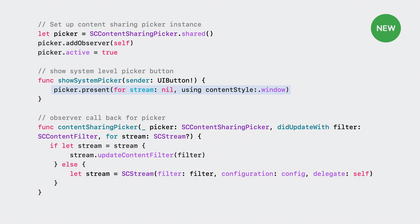To make a stream where people are allowed to choose windows through the picker, call the singleton method picker.present and pass in nil and the style of picker you want to present. Once people press your UI button, the picker will be presented, allowing them to choose windows they wish to capture. After that content has been selected, you will be notified via the observer callback of a new filter. You are then free to either create a new stream or update an existing stream using this filter.